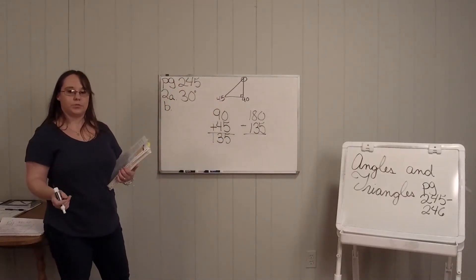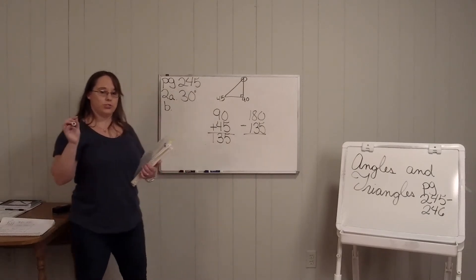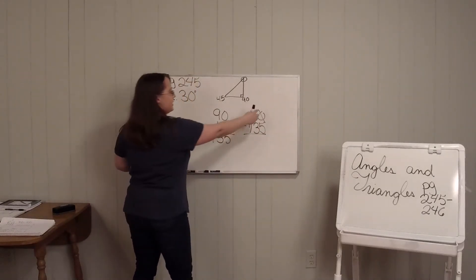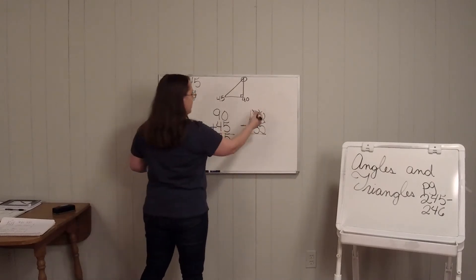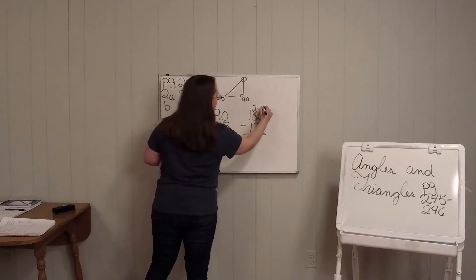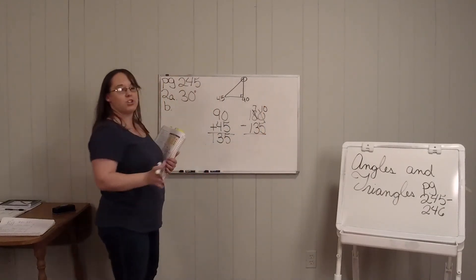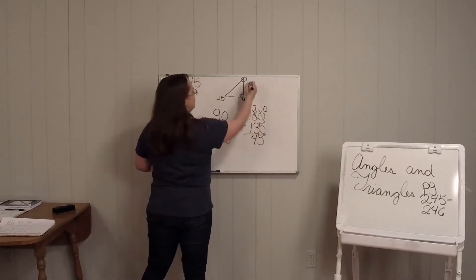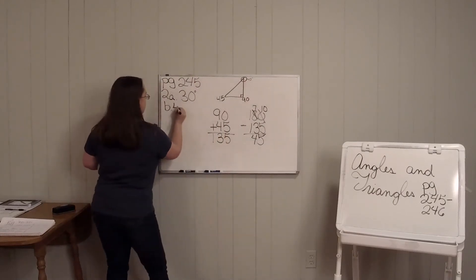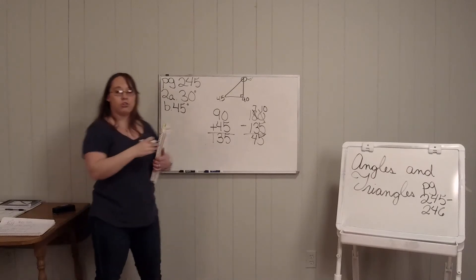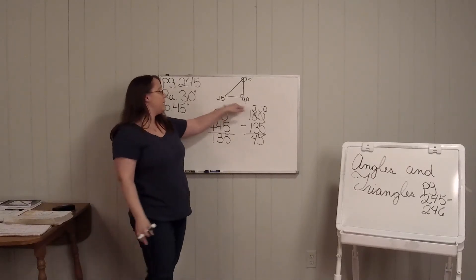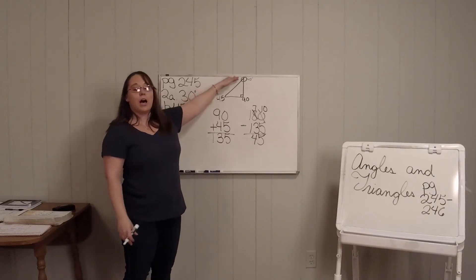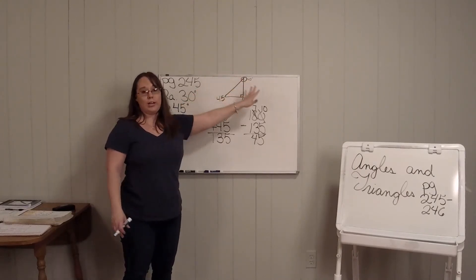Now you've got to subtract. Don't forget your rules for subtraction — some of you forget them. You're going to have to go to your neighbor: if you have 0, you cannot take 5 away. You have to borrow from your neighbor; he turns to a 7, 0 becomes a 10, now you can subtract. The answer is 45. So when you have a right triangle with 90 and 45, the missing angle is automatically 45. Or if you have 90 and 60, it's automatically going to be 30.